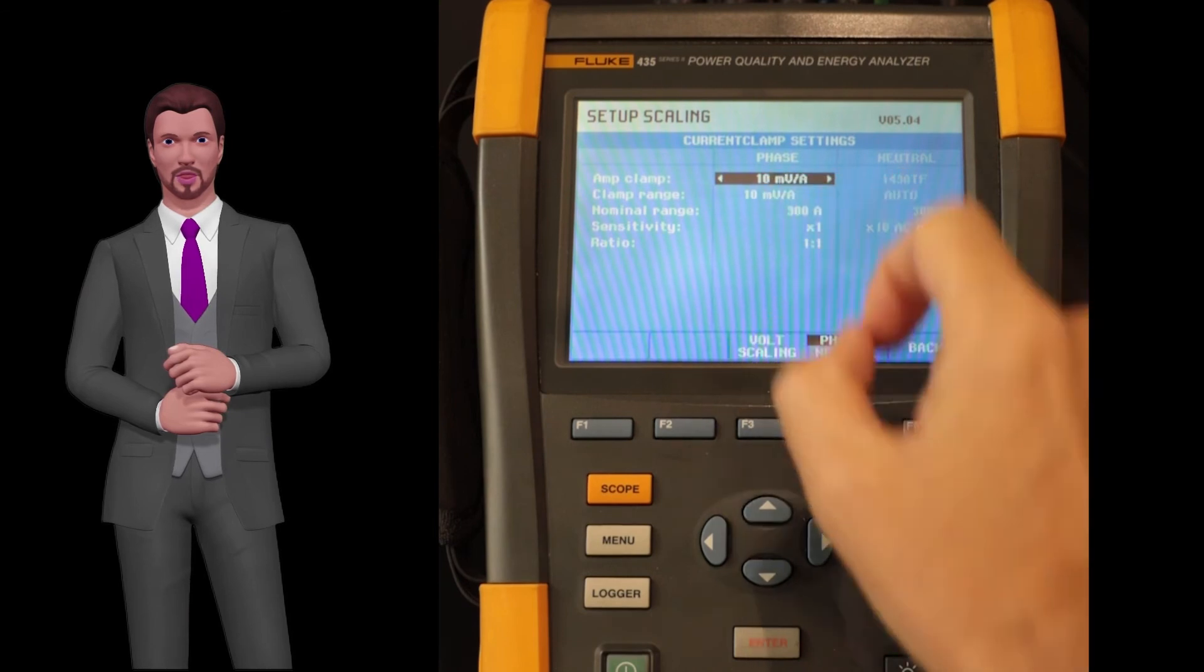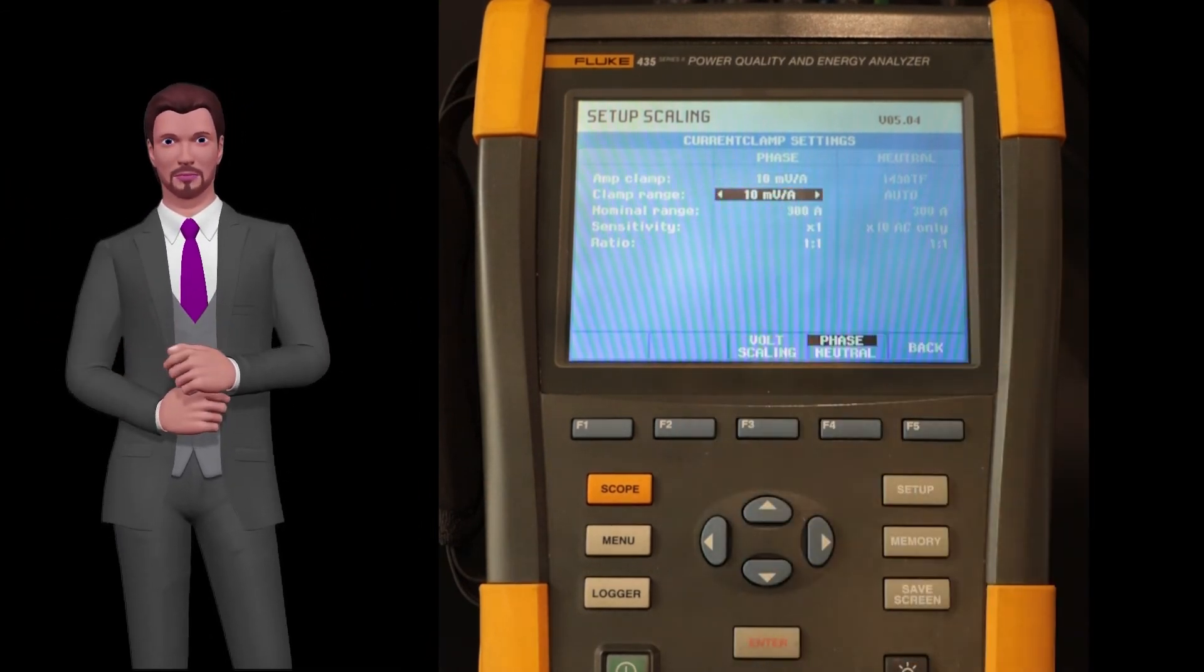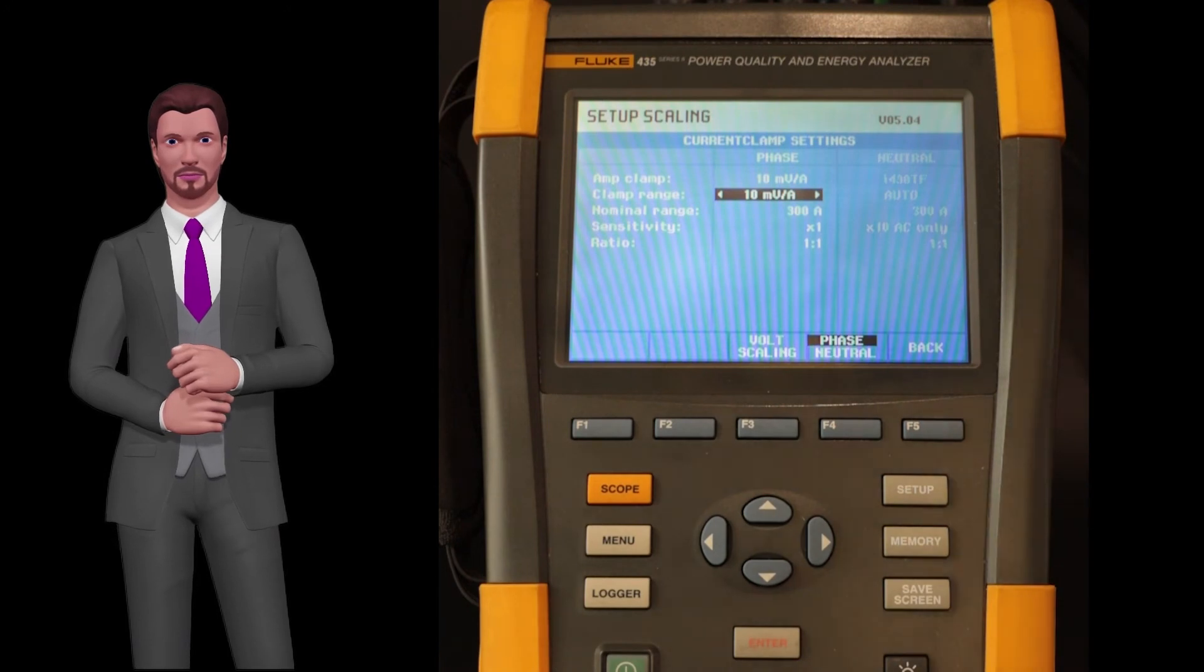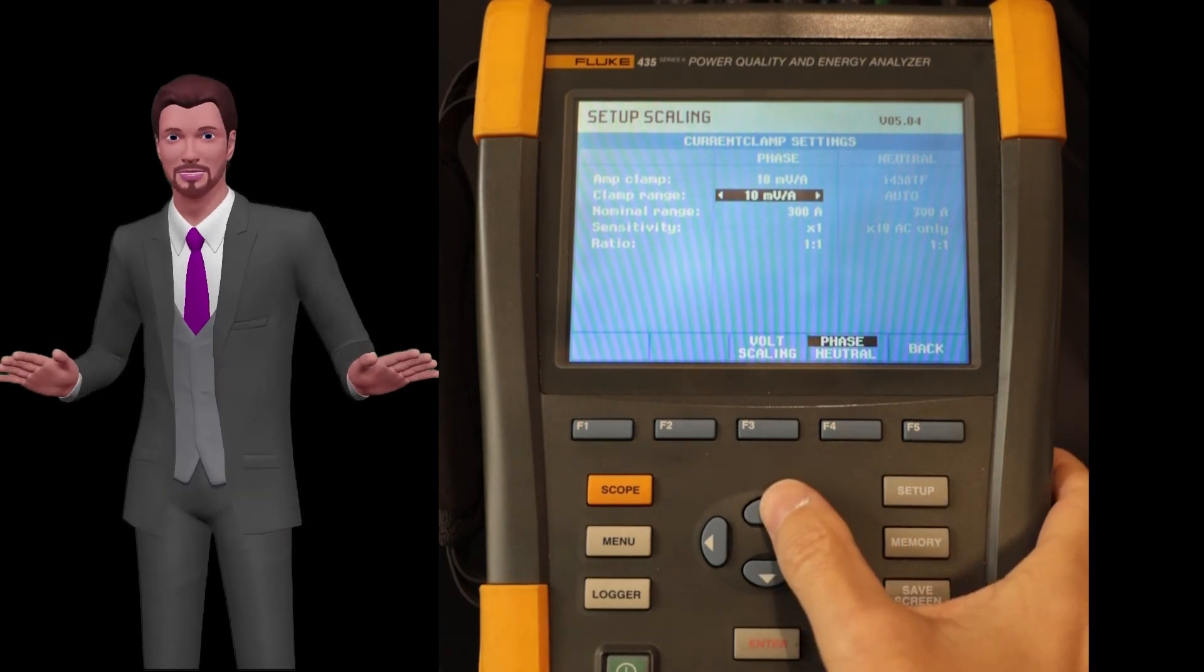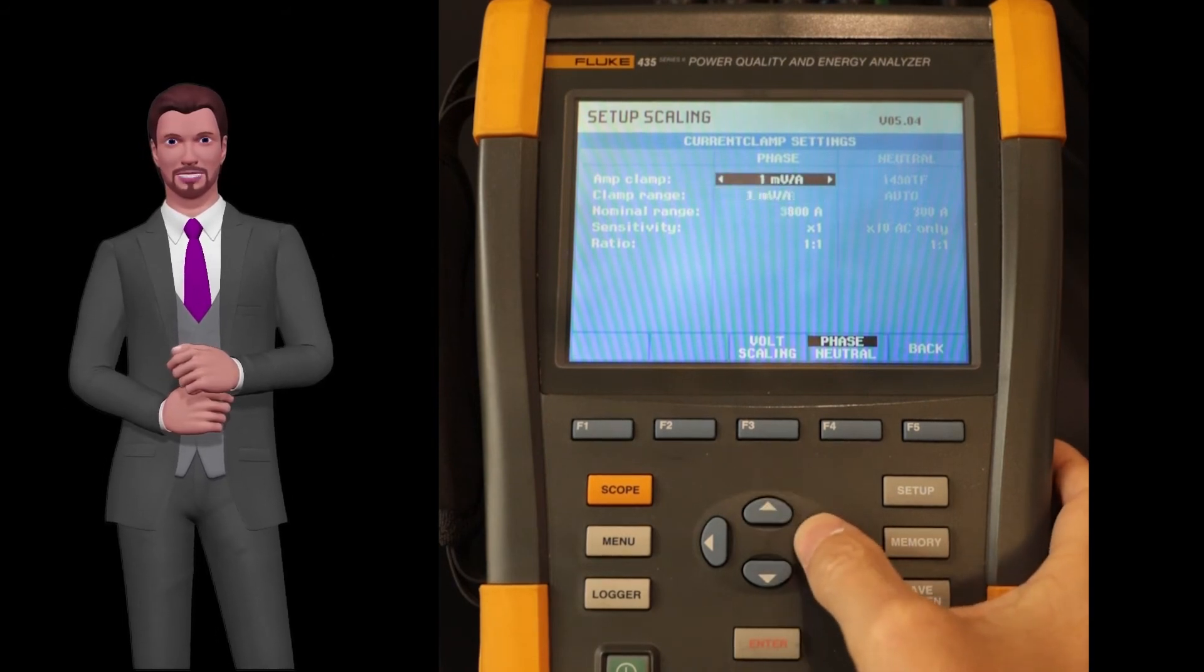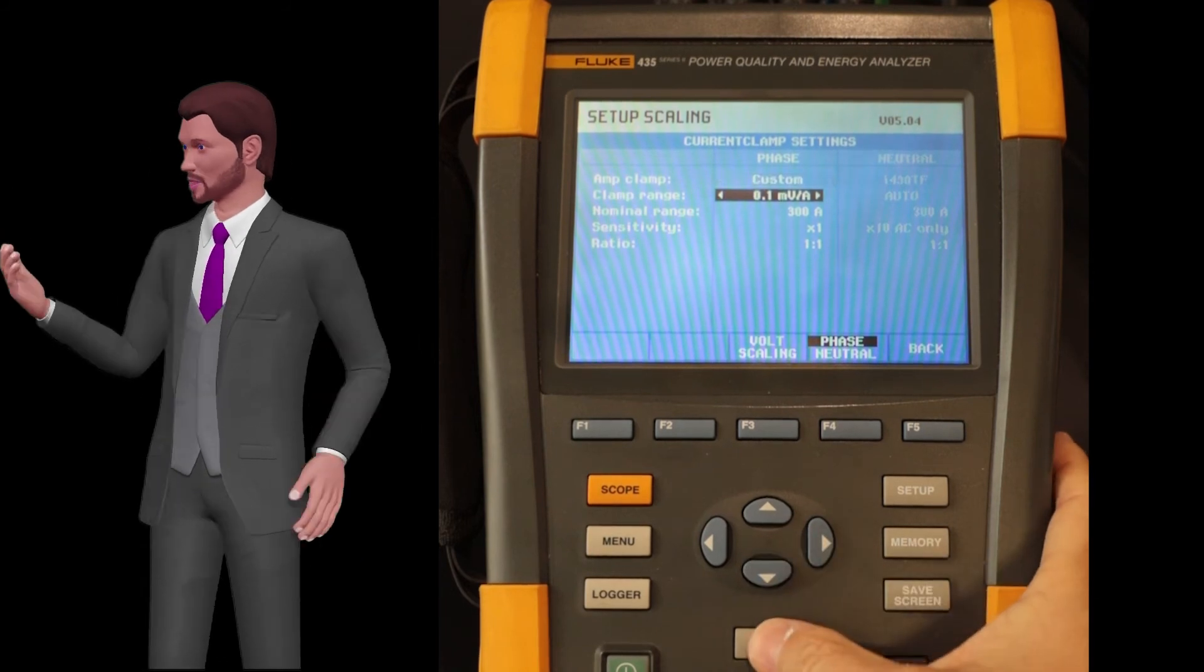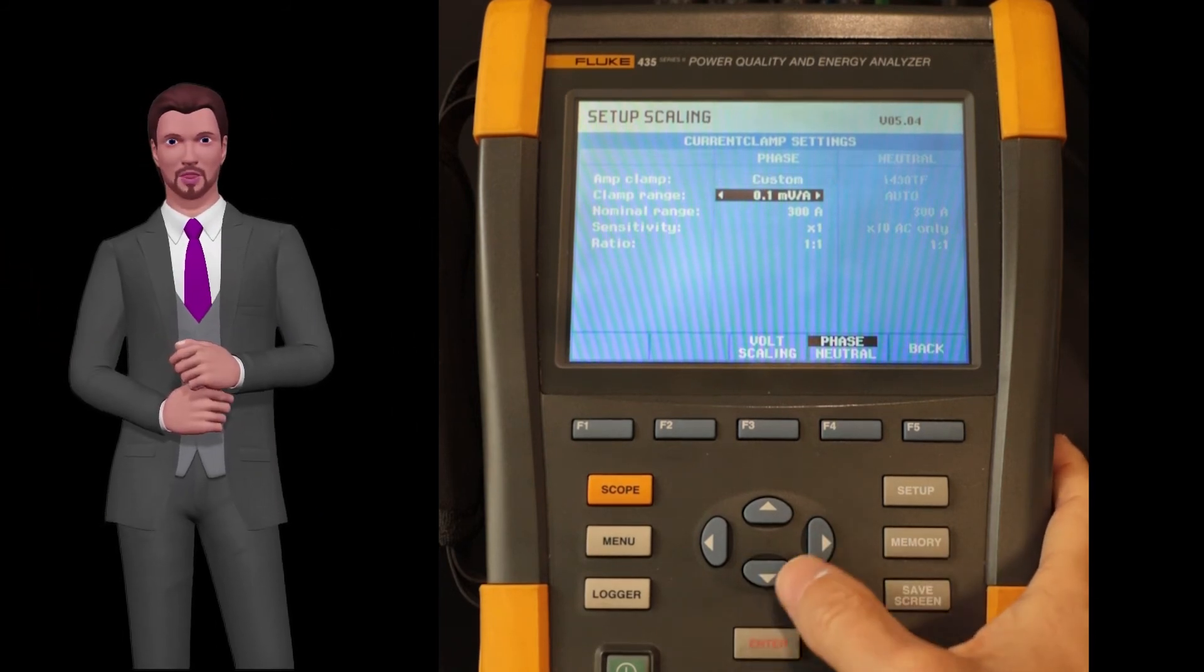In this case, precisely in the next parameter called clamp range, this value of millivolts per ampere will appear. In the case of using a special probe, the unit also allows to manually define the output of that probe. In this case we choose custom in the probe type, and now we can manually change the millivolts per ampere according to the technical specification of that probe.